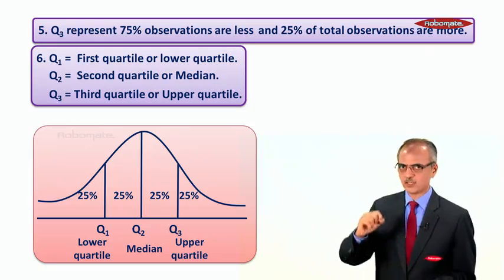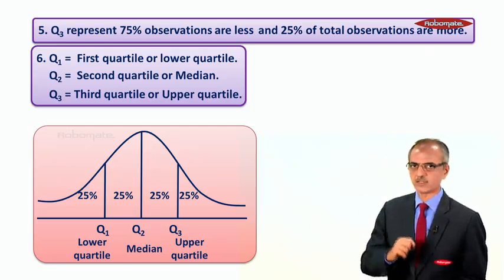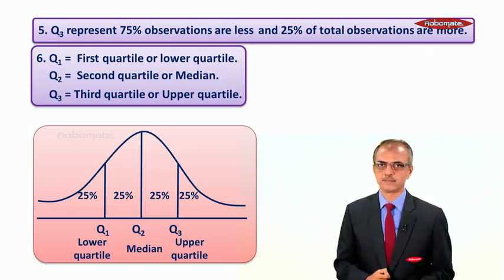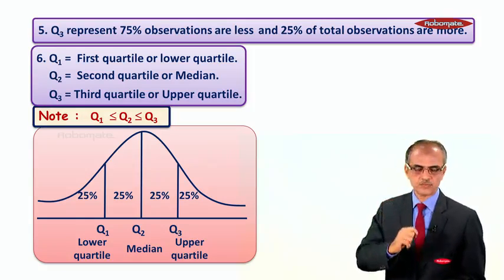Q1 is the first quartile, Q2 is called the median or second quartile, Q3 is called the upper quartile. Q1 is less than or equal to Q2 is less than or equal to Q3.